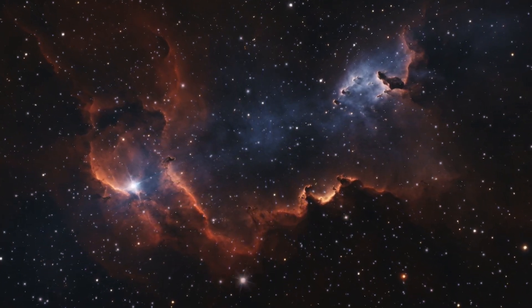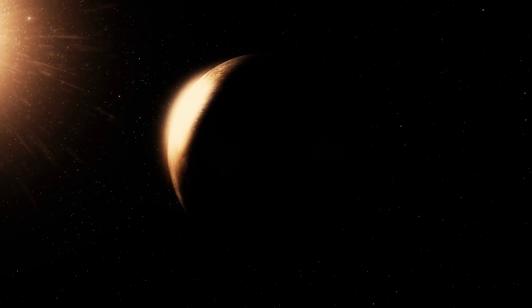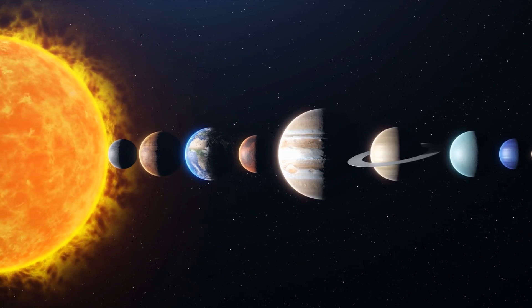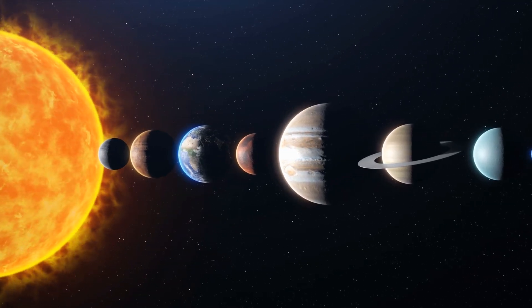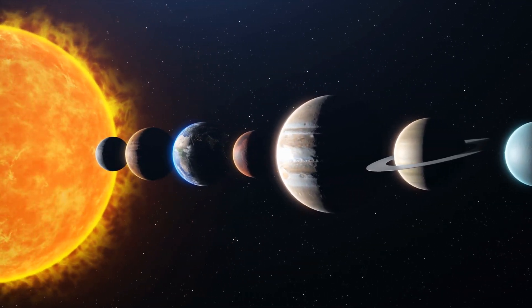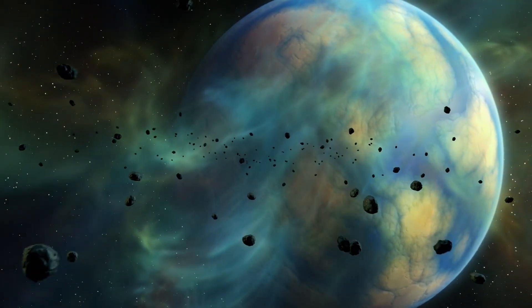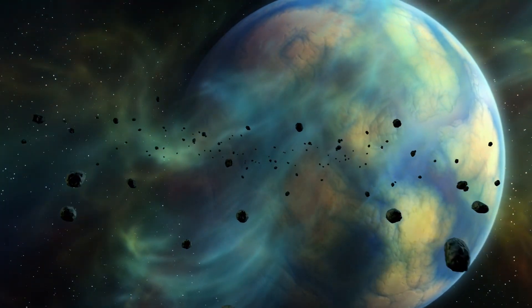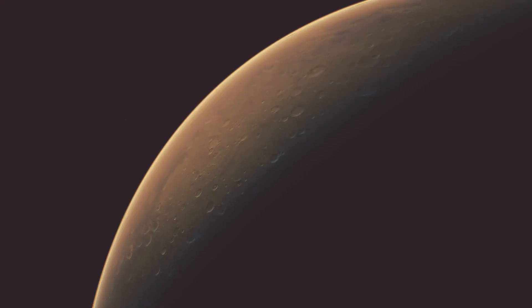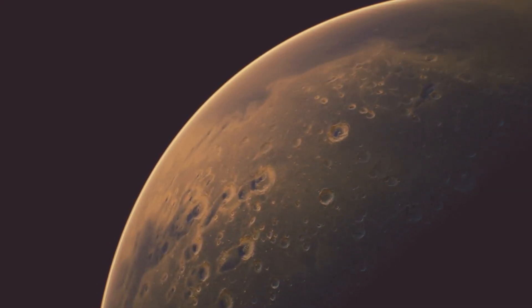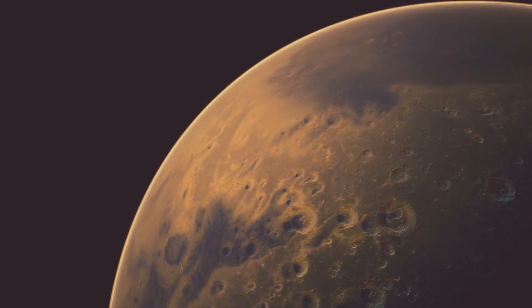How do these cosmic nomads come to be? One theory suggests they're ejected from their home systems during the tumultuous birth of stars and planets. Gravitational tugs of war can fling these planetary bodies into the interstellar void. Another possibility is that they're captured from other star systems, snatched away by the gravitational pull of a passing star. Giant planets like Jupiter are the big kids on the block, and sometimes they can accidentally knock smaller planets out of their orbits.